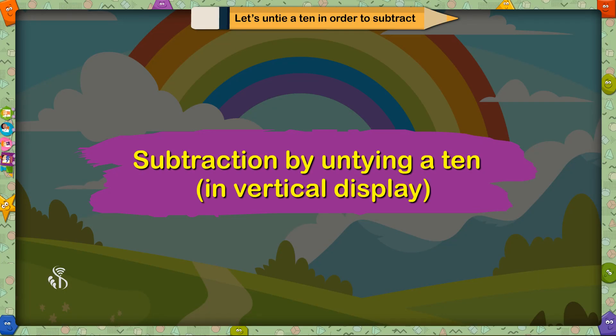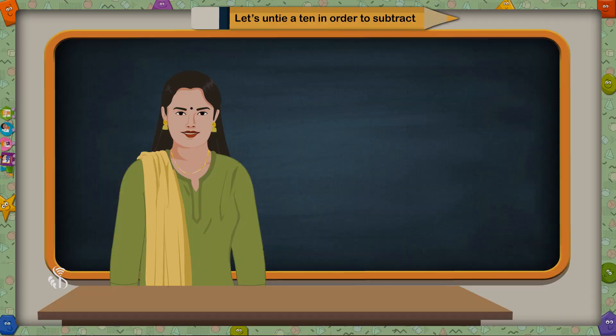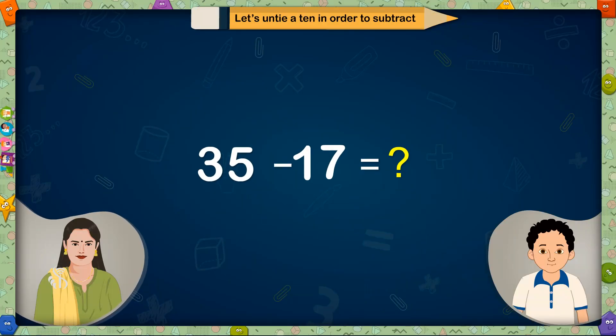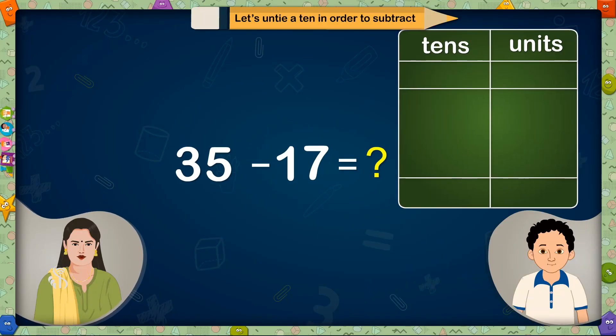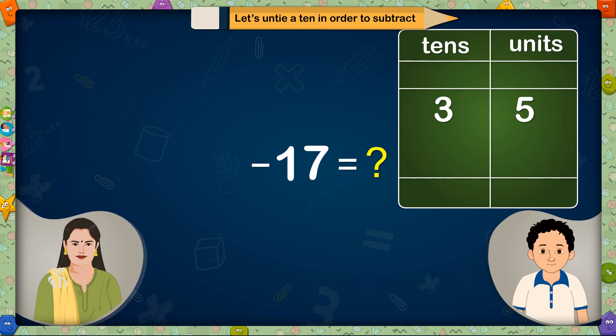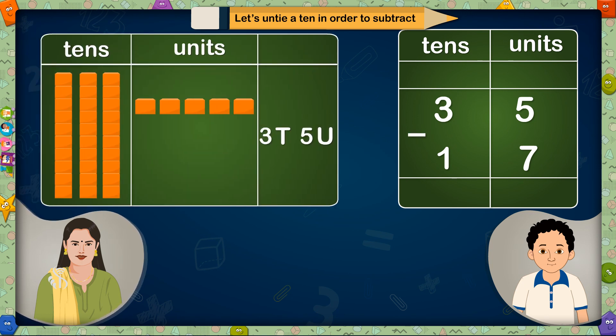Subtraction by untying a 10 in vertical display. Now we will untie a ten and solve the subtraction sums in vertical columns. 35 minus 17 equals. First we will write this sum in tens and units columns. From 35 we will write 5 in units place and 3 in the tens place. The next number is 17. We will write 7 in units place and 1 in tens place, and I will put the minus sign here.